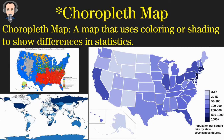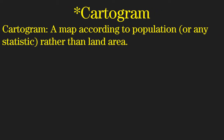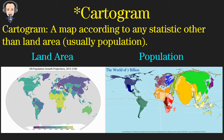This is called a choropleth map. The next one is kind of a fun one — it's called a cartogram. A cartogram is a map drawn according to population or any statistic rather than land area. Now typically it is population, but it can be anything. Here are some examples. The map on the left is a land area map — we're used to seeing these types of maps all the time. But what we see on the right is a population cartogram.